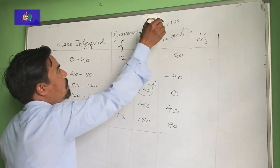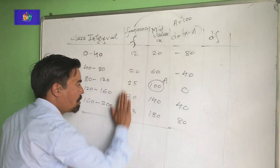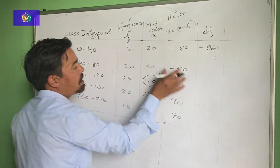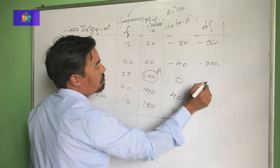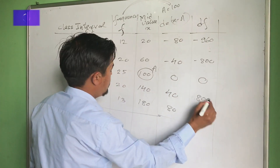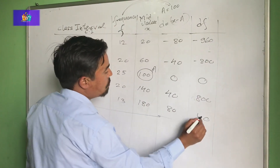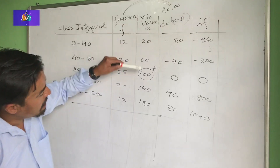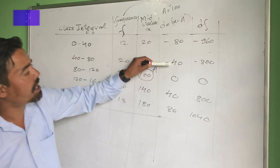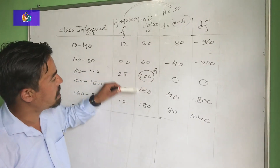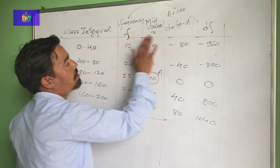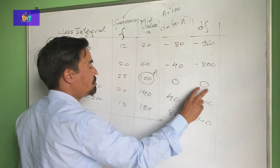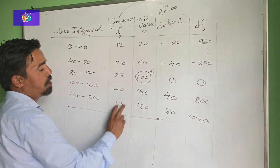Now computing DF column: 12 times minus 80 equals minus 960. 20 times minus 40 equals minus 800. 25 times 0 equals 0. 20 times 40 equals 800. 13 times 80 equals 1040. Summation F: 12 plus 20 is 32, plus 25 is 57, plus 20 is 77, plus 13 is 90. Summation F equals 90.